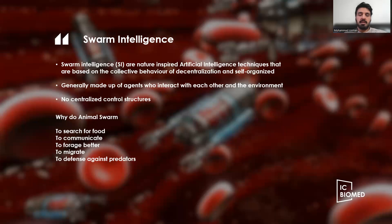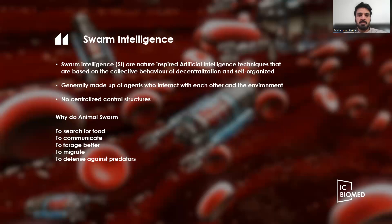Generally, these swarms are made up of agents which interact with each other and the environment, with no central control on the structure of the swarm. We have already seen around us different types of animals, birds, or insects that exhibit swarming behavior.